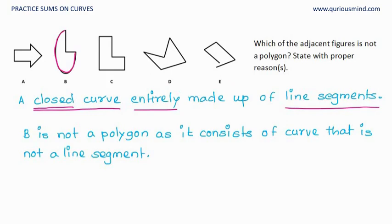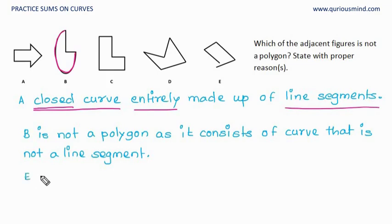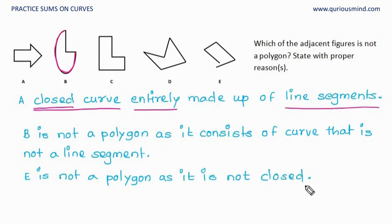What about E? I can draw it without lifting a pencil, so yes, it is a curve. But is it closed? No. The start point and the end point are separate. And though it is a curve made up of line segments only, it is not a closed curve, and hence it is not a polygon. It is not closed.